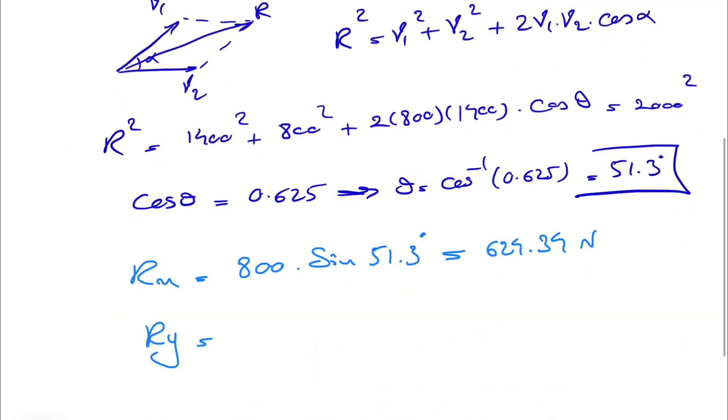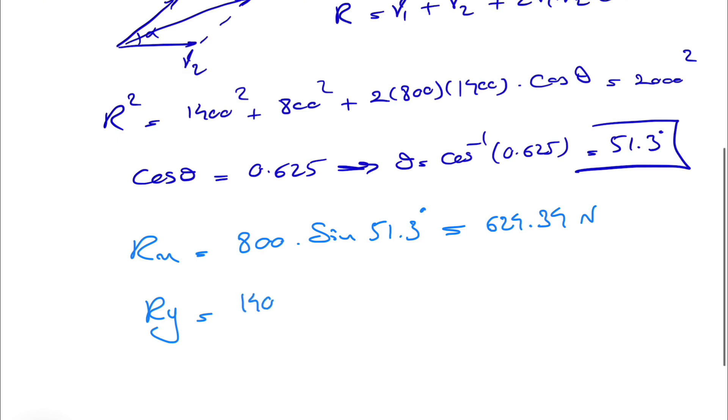As I said, the 1400 is already in the y direction. So 1400 plus 800 cosine of 51.3, which is the y component of the 800 newton force. This will be 1900.19 newtons.